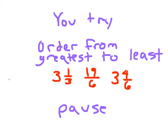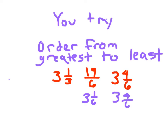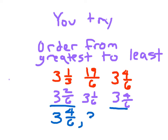19 sixths as a mixed number: 6 goes into 19 three whole times with a remainder of 1, so that's 3 and 1 sixth. We also have 3 and 4 sixths. Rewriting 3 and 1 third as 3 and 2 sixths gives a common denominator. Now all are mixed numbers with sixths. Ordering from greatest to least: the biggest is 3 and 4 sixths — written as given. Next is 3 and 2 sixths, originally given as 3 and 1 third. Finally, 3 and 1 sixth, originally given as 19 sixths. That's our ordered list from greatest to least.